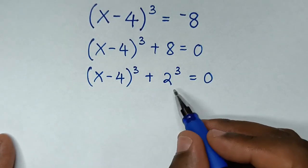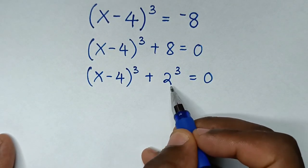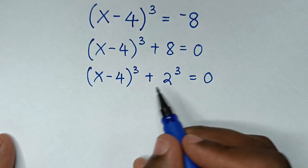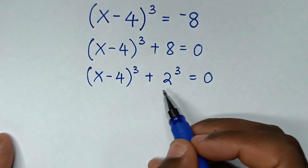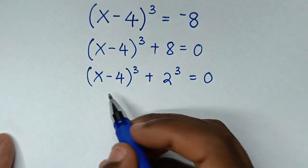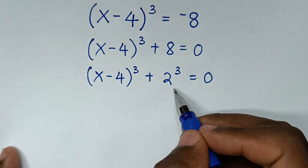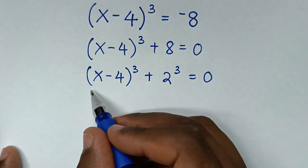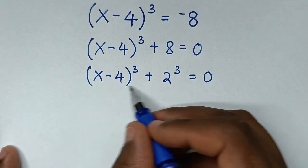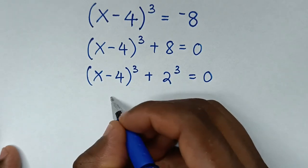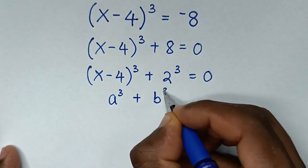We have (x - 4)³ + 2³. They have the same power of 3 but different bases, and there is addition between them. This is in the form of the algebraic rule a³ + b³, so we'll apply that algebraic identity.